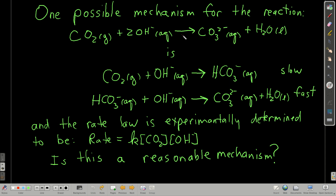Now let's do an example. We're trying to figure out the mechanism for this reaction: carbon dioxide gas reacting with hydroxide in aqueous solution to make carbonate and water. A proposed mechanism is: step one (slow, rate-determining) — carbon dioxide reacts with hydroxide to make bicarbonate; step two (fast) follows. It's known experimentally that the rate law is K[CO₂][OH⁻]. We want to see if this is a reasonable mechanism — does it meet our requirements?